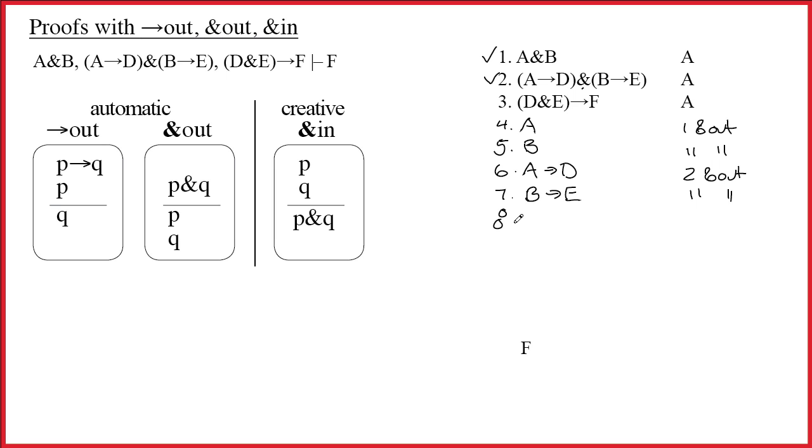So line eight, I get to write D. Justification? Well, I made use of both six and four. So I'm going to say four, six, arrow out. And what do I get to check off? I get to check off six. Because I applied a rule to its arrow. Okay.